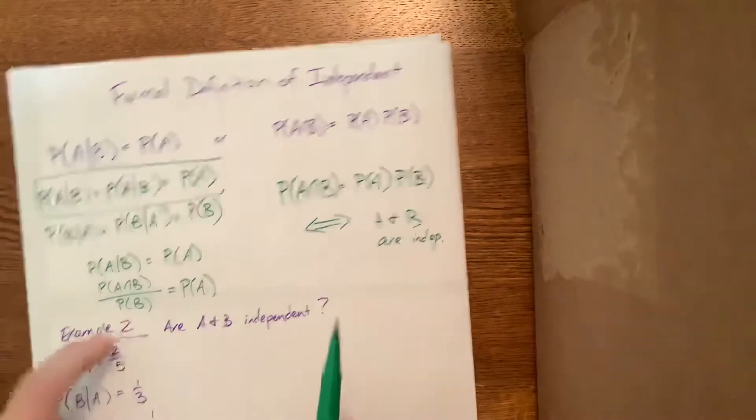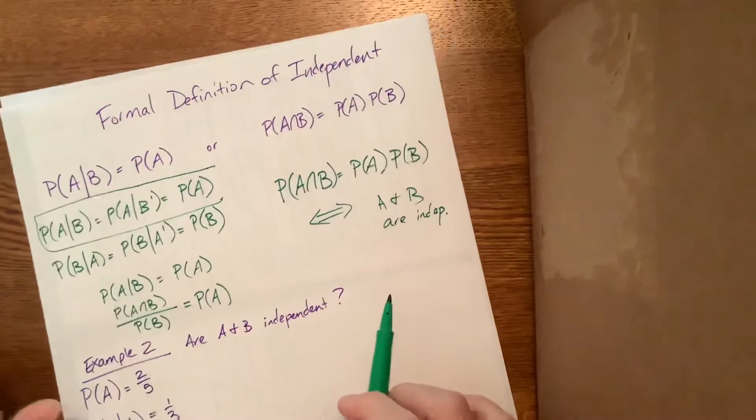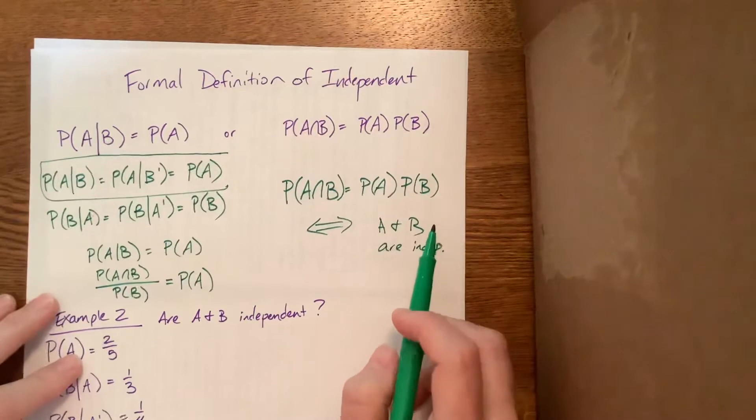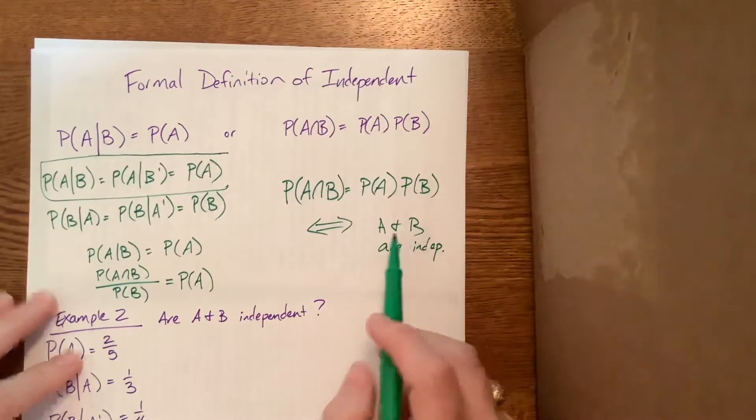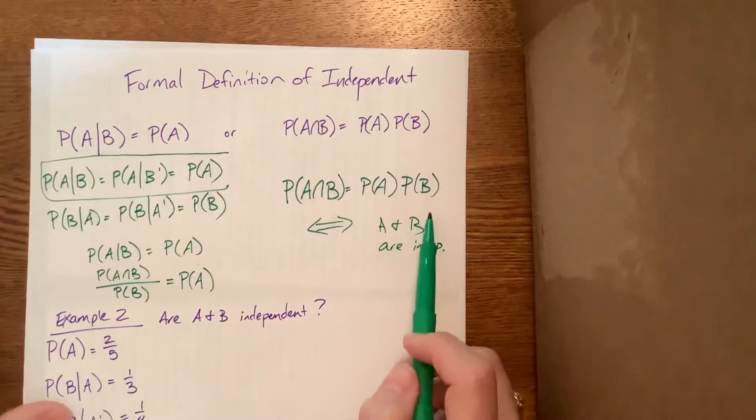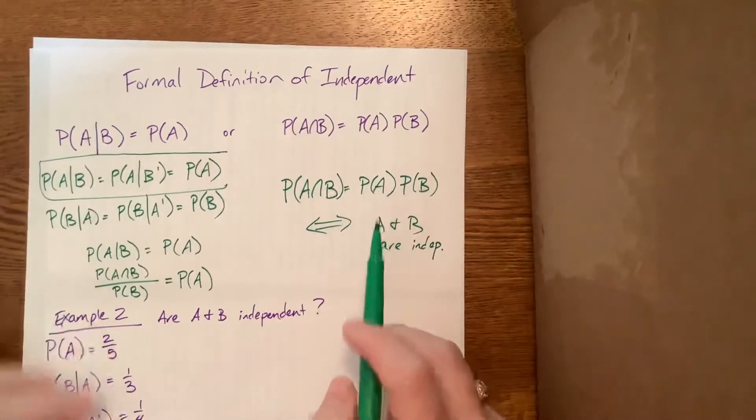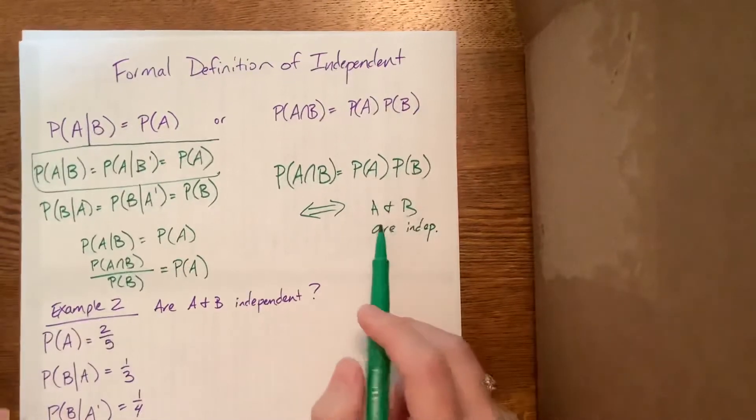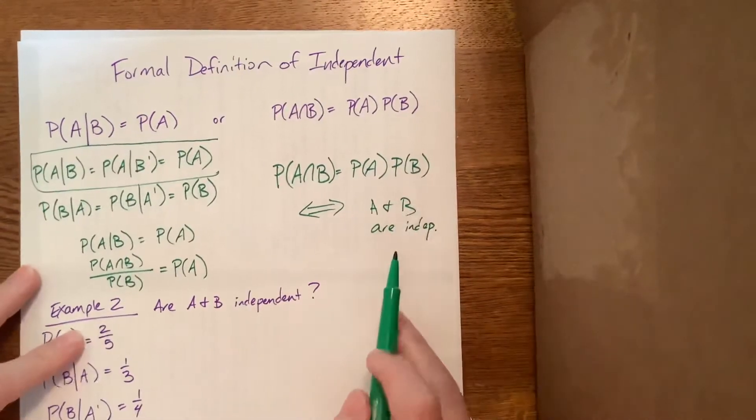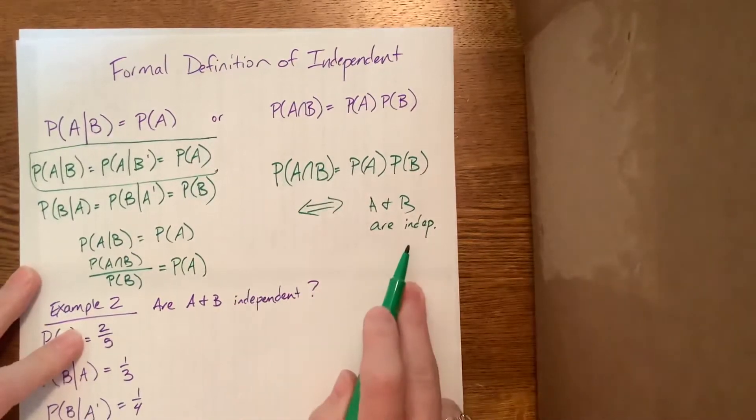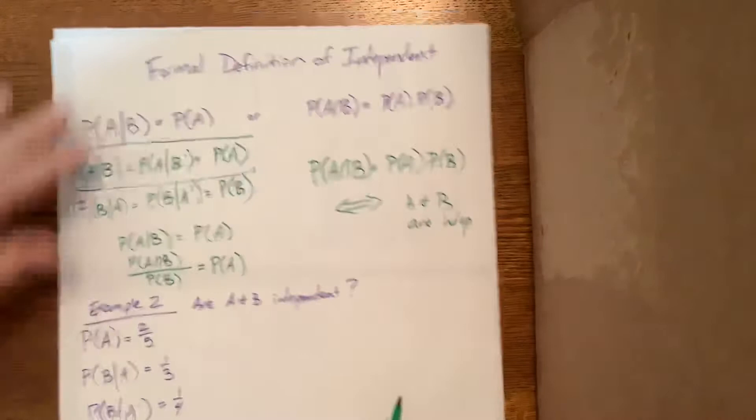And this is one of those things where we can say if and only if A and B are independent. The mistake I've seen over the years from kids is that they will use this formula even if it's not... You can only use the formula if they tell you they're independent. Or you can use this formula to check to see if they're independent. This formula works when they're independent. So if you know they're independent, then you can use this formula. If this formula is true, then you can therefore conclude that they're independent.